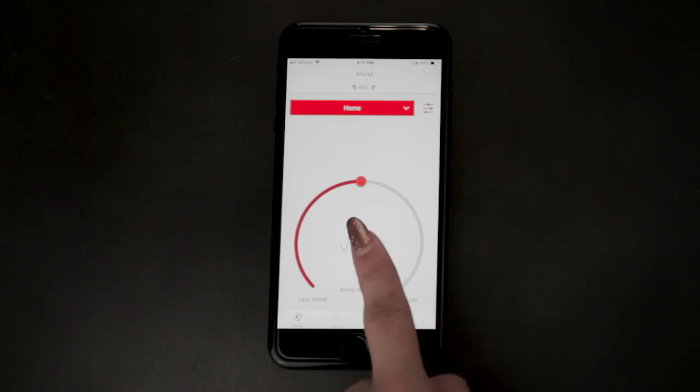You can also tap the middle of the wheel to mute and unmute the world around you. Be sure to visit nuheara.com/support for more helpful information.